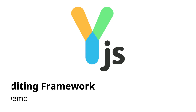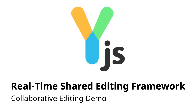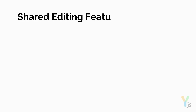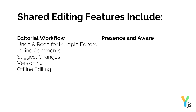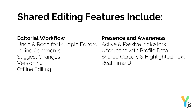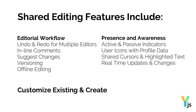YJS is a powerful, open-source, real-time shared editing framework that enables developers to easily add collaborative capabilities to any type of application. The framework provides a robust and mature set of features, enabling content creators to coordinate efforts and work effectively and efficiently in real-time. You can leverage the existing functionality and user experience, or create your own custom capabilities.